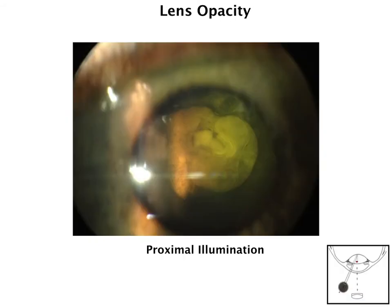As we look at this next picture, we can see a rather significant lens opacity, and with something this large, the best way to image it is using proximal illumination. Again, this is where we shine the light next to the area of interest, and that allows the light to kind of diffuse over and capture the full extent of that pathology, as you can see in this picture.